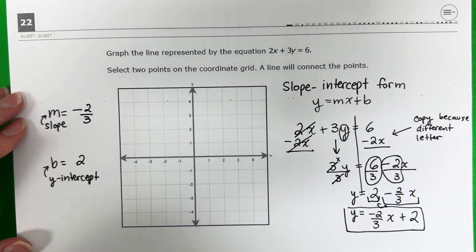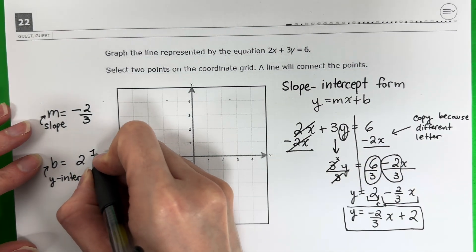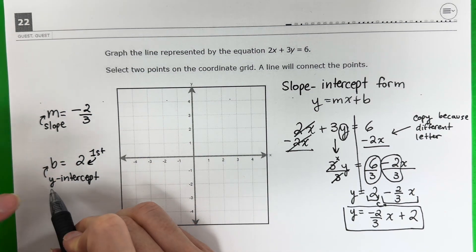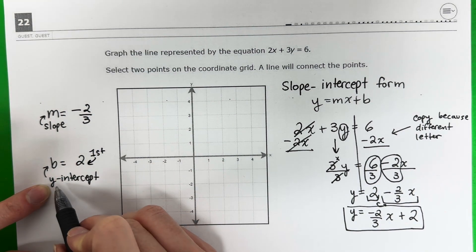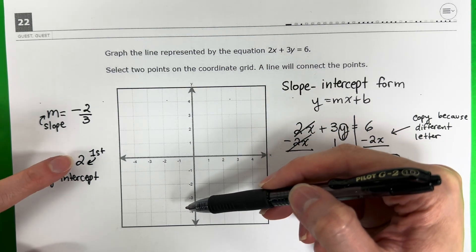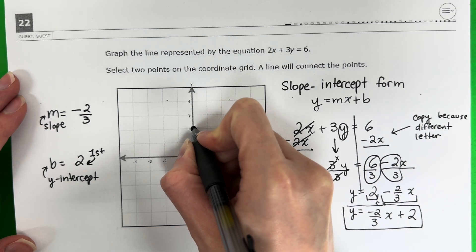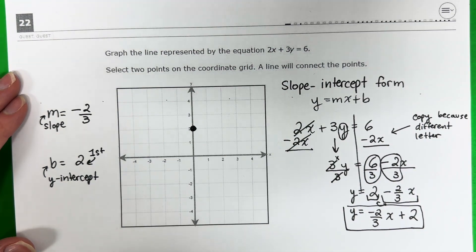The first one that you put on the graph, the first point, is the b. The b is first. So I need to find positive 2 on the y because this is the y intercept. This is the y. So you have up or down. Those are your options. Positive 2. Positive is up. Negative is down. But positive is up, so I'm going to put my point there.